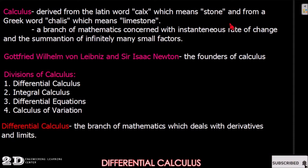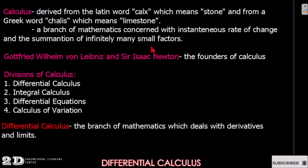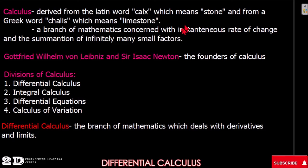The actual definition of calculus is that it is the branch of mathematics concerned with the instantaneous rate of change and the summation of infinitely many small factors. We can relate this to the summation of stones — the rate of change of a small object — which is why the term calculus comes from 'calcs' or 'chalice,' meaning stone.